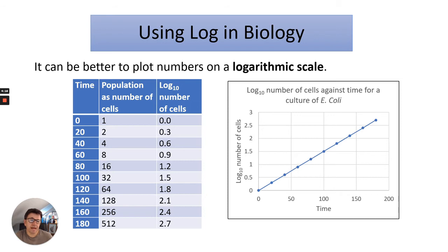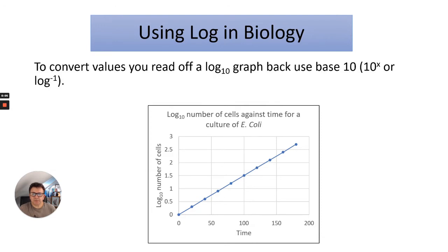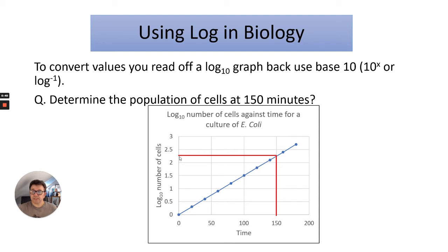Let's look at a few questions and see how we use this graph to answer them. You can convert the values you read off a log10 graph back using base 10, which is either 10^x or log minus 1 on your calculator. To determine the population of cells at 150 minutes, get a ruler, draw a line, and where it bisects the line of best fit, read across to the log10 number — in this case I'm going to say that's 2.25.